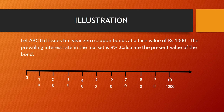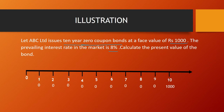Now let's understand with the help of an example. A 10-year zero coupon bond has a face value of Rs. 1000 and the prevailing market rate of interest is 8%. Since the coupon rate of 0% is less than the market rate of 8%, the value of the bond should be less than Rs. 1000. The interest at the end of each year from year 1 to year 10 is zero, and you only get Rs. 1000 at the end of the 10th year.